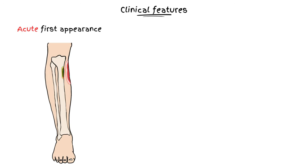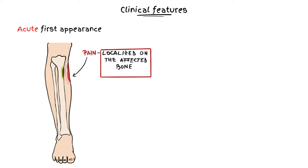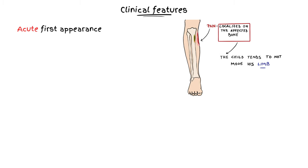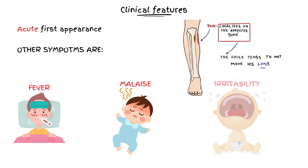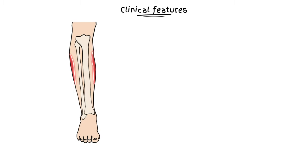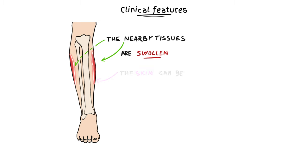The clinical picture has an acute first appearance. The first symptom is pain, localized on the affected bone, and it is a severe type of pain. Because of this, the child tends to not move his limb. If the microorganism is disseminated in the blood flow, it can be associated with fever, malaise, and irritability. The nearby soft tissues can be swollen if the infection has passed the bone. The skin can be red and warm on palpation.